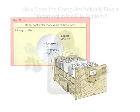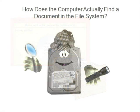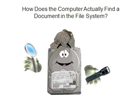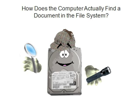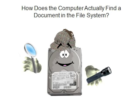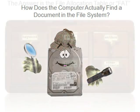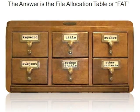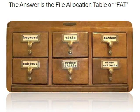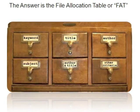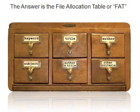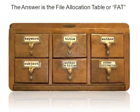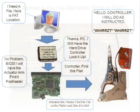To actually find a document in the file system: every time a file is written to the hard drive's file system, the operating system keeps an index of all the locations where the files are stored. This index is called the FAT, or the file allocation table. Every time the operating system needs a file — say, a Microsoft Word document from your desktop — it reads the file allocation table to know where the file is located in the file system.